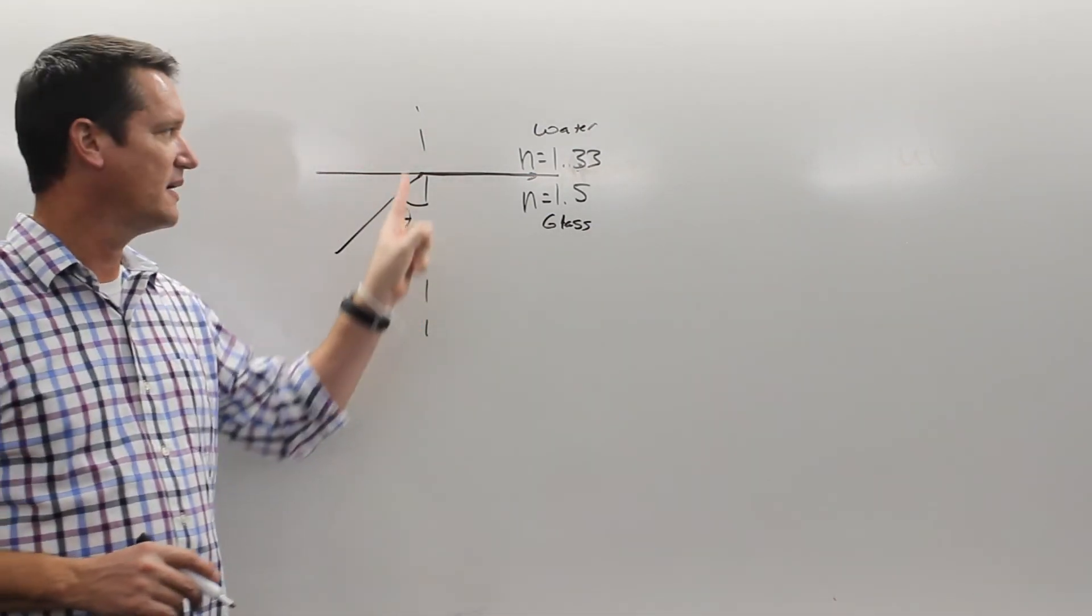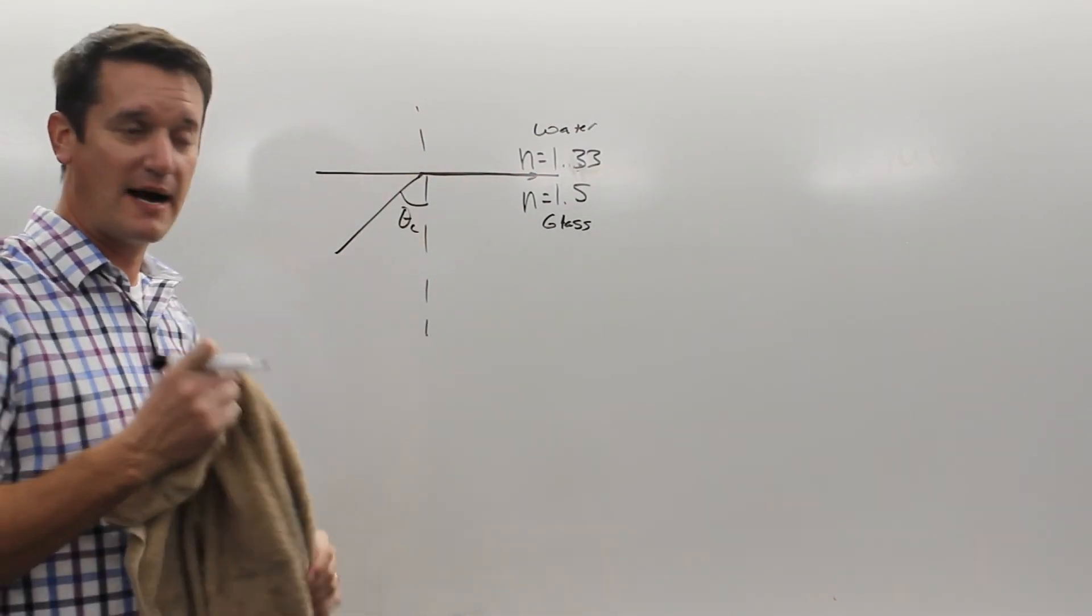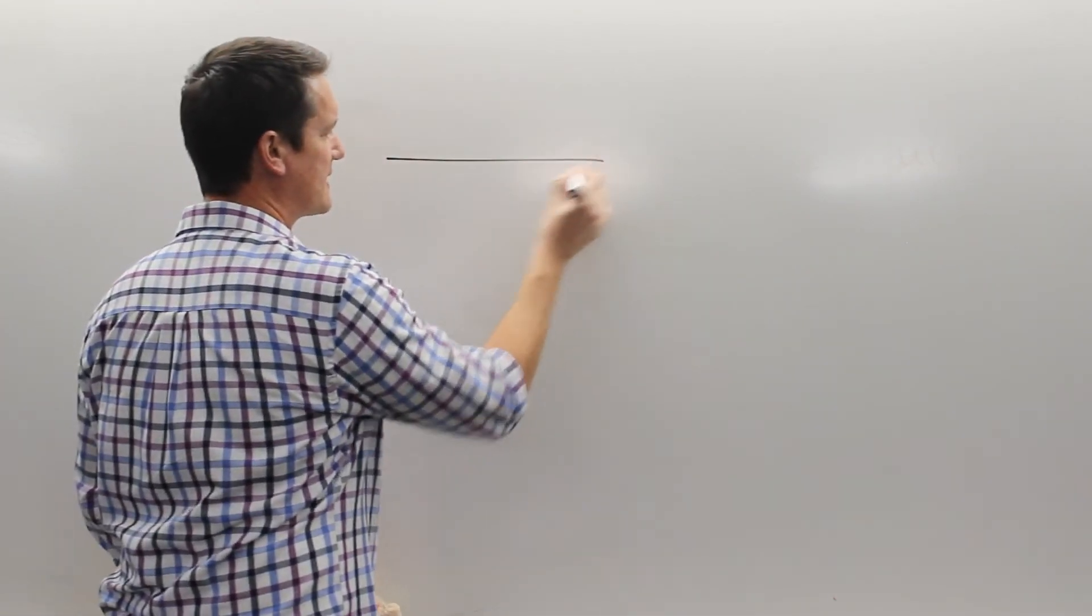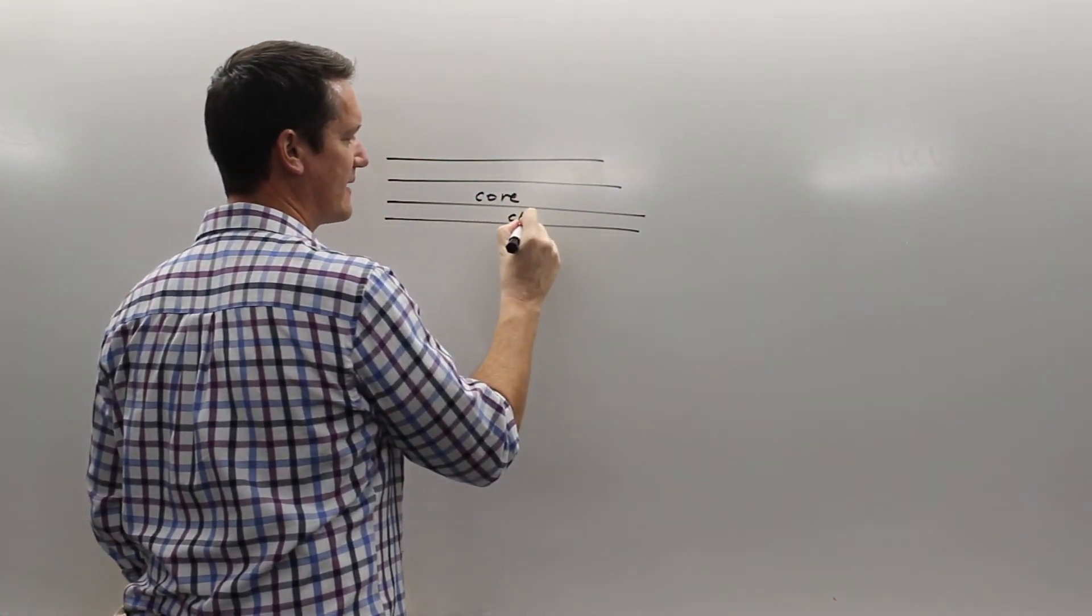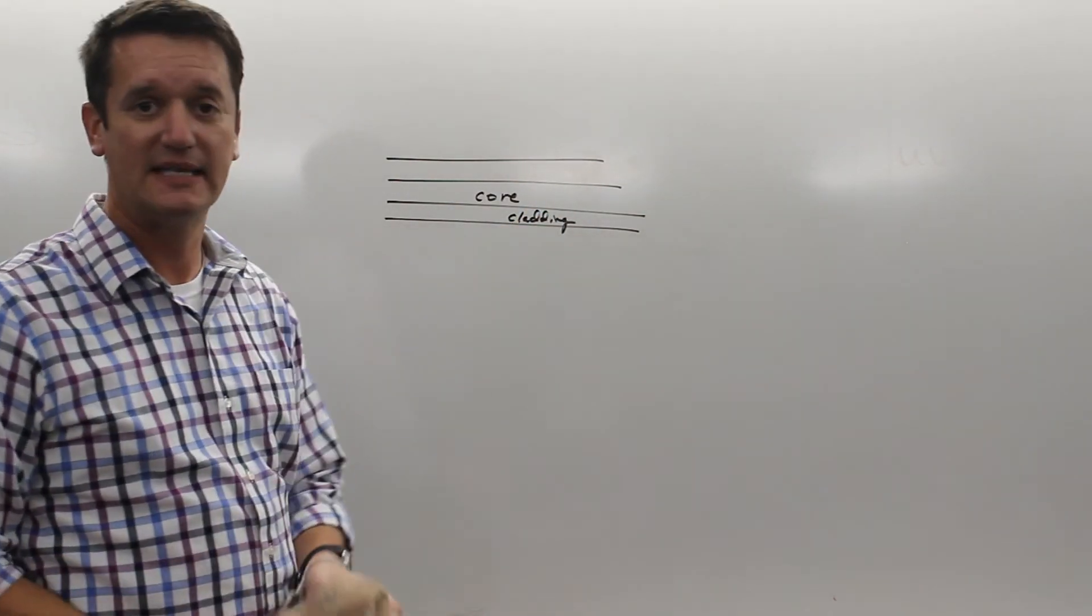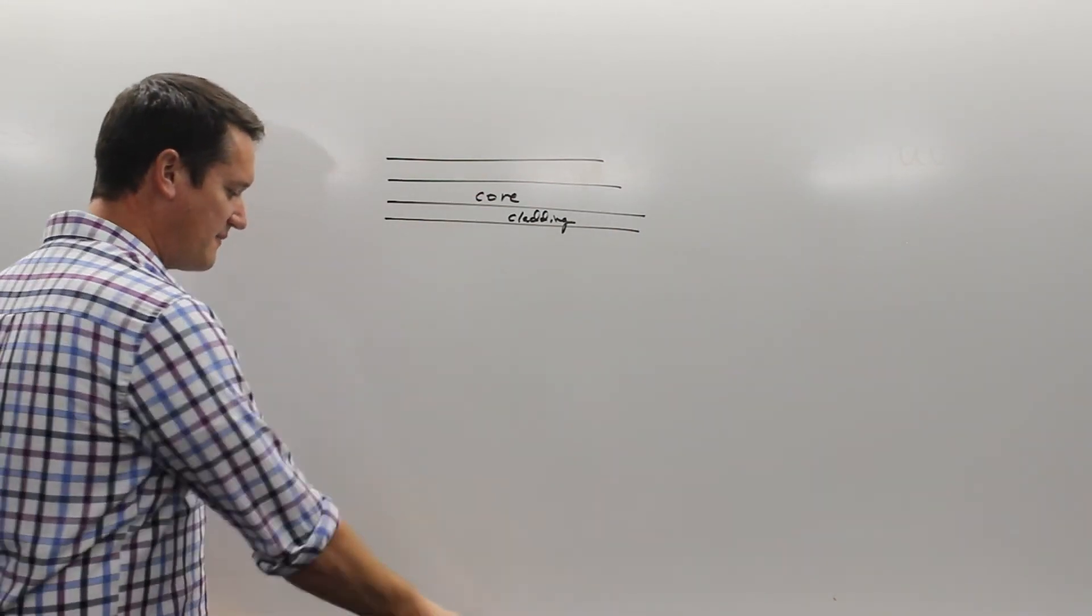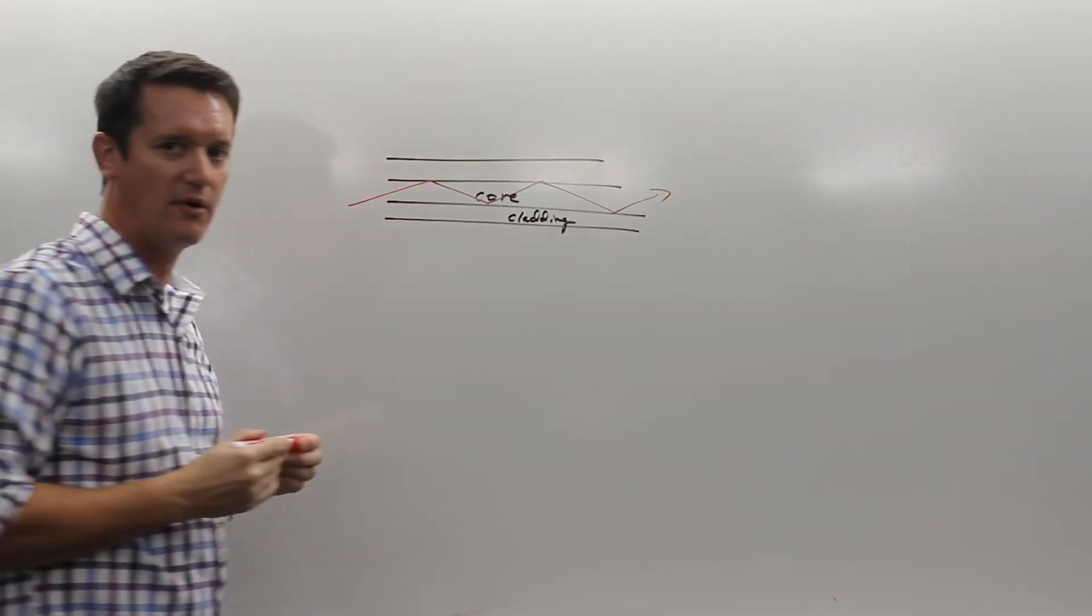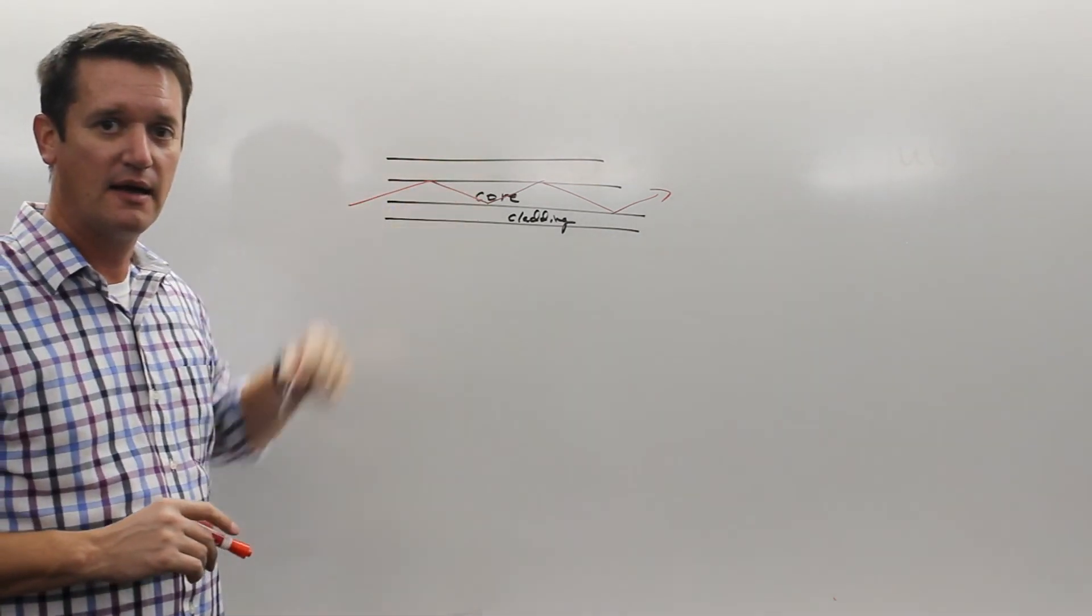Now, in fiber optic cables, this is what they play with. They actually have, a fiber optic cable actually has a core. This is the core, and it has what's called a cladding, which is another optically dense material outside of that core. So the beam of light actually comes in here, total internally reflects all the way down this cable, because it has a different optical density between the cladding and the core. Let's see if we can't put all this together.